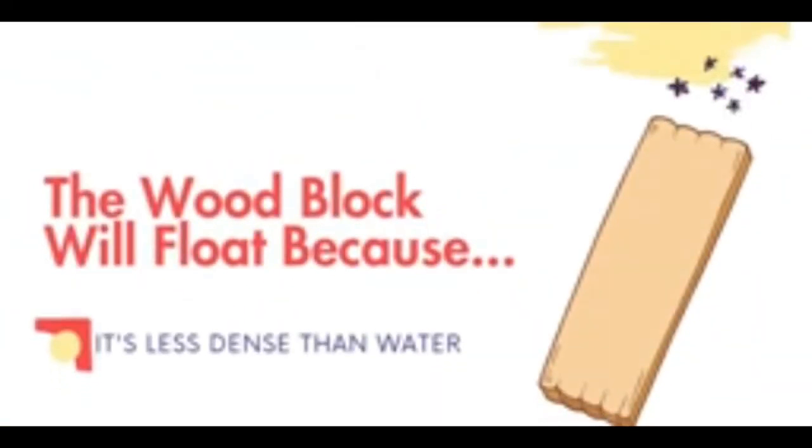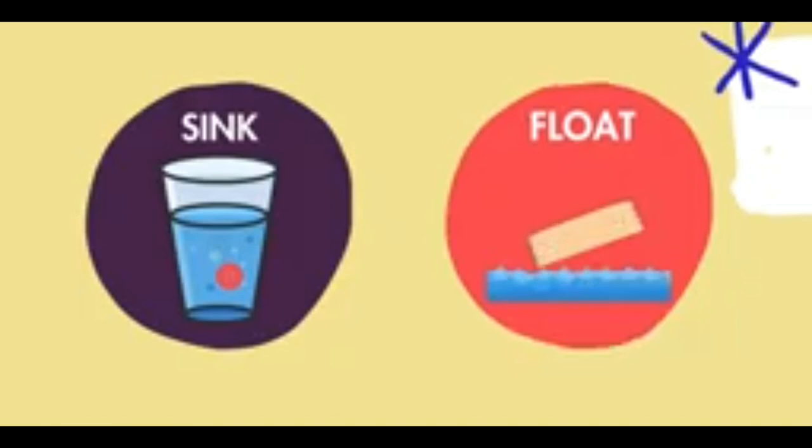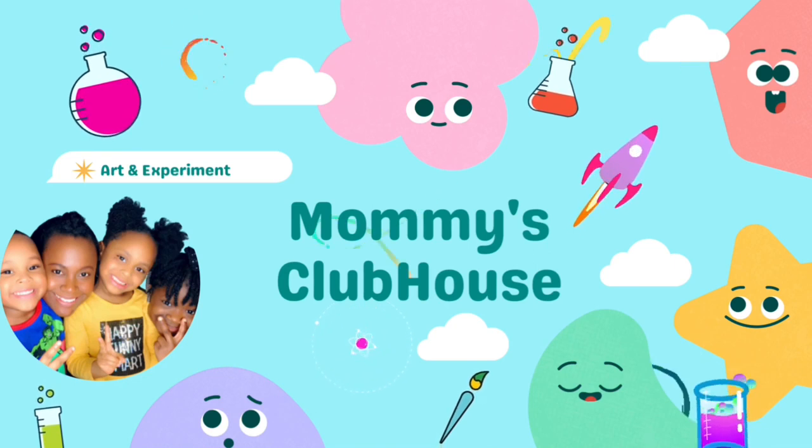A block of wood can float because those materials have less density than water. Objects that are less dense than water float. Objects that are more dense than water sink. There are a lot of ways you can explore density at home.